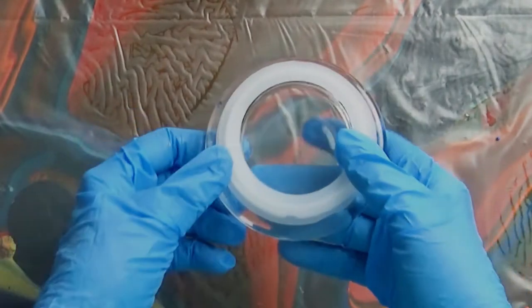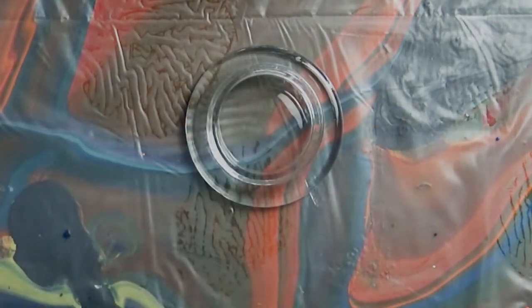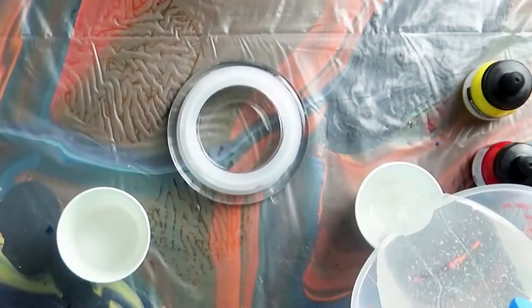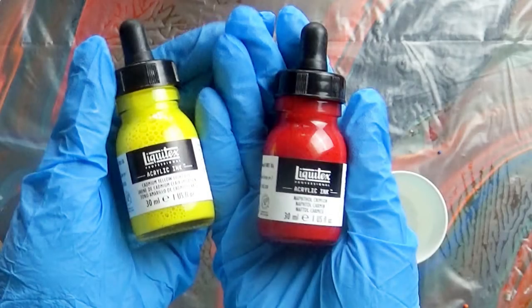For the base, I'll remove the plastic gasket from a candle jar lid. These lids work great because of their weight. I've mixed up some more pro marine and this time I'm going to use some Liquitex acrylic inks for my colorant.